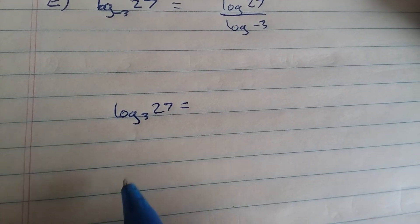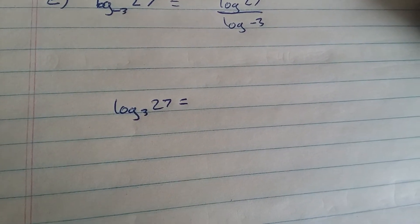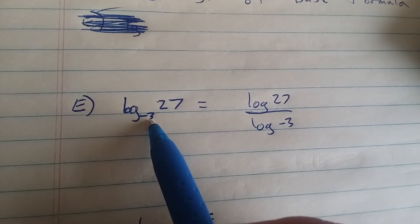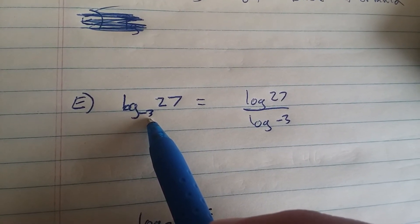Because 3 times 3 times 3 is 27, but negative 3, you cannot multiply itself by a number a certain number of times and get 27.